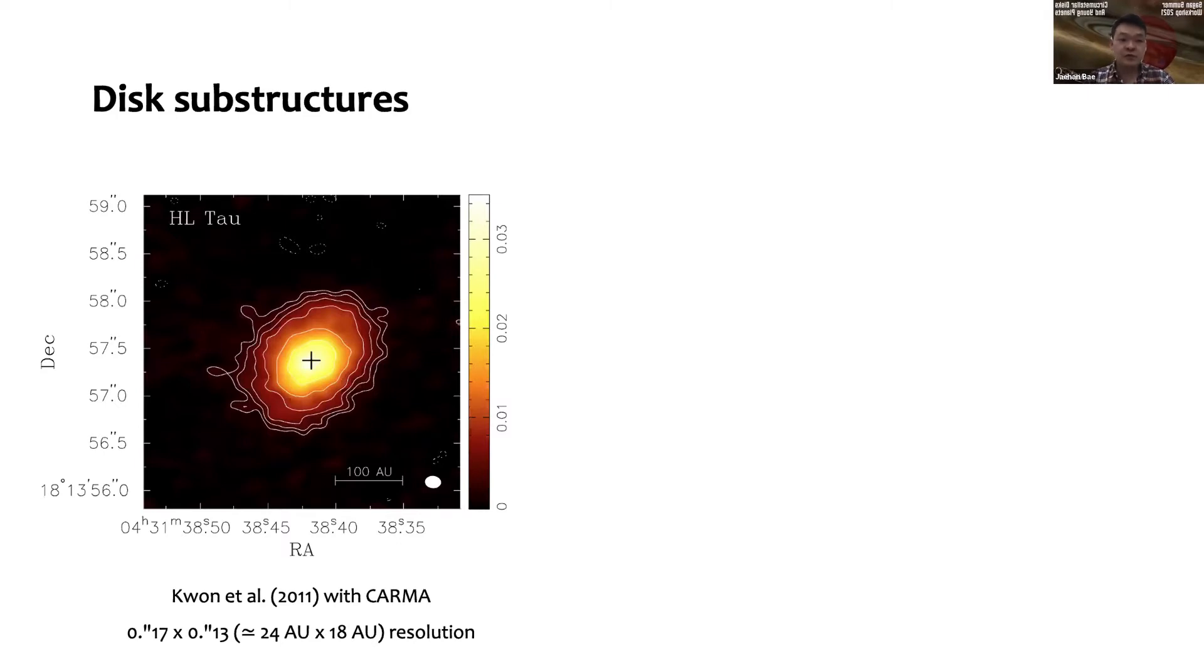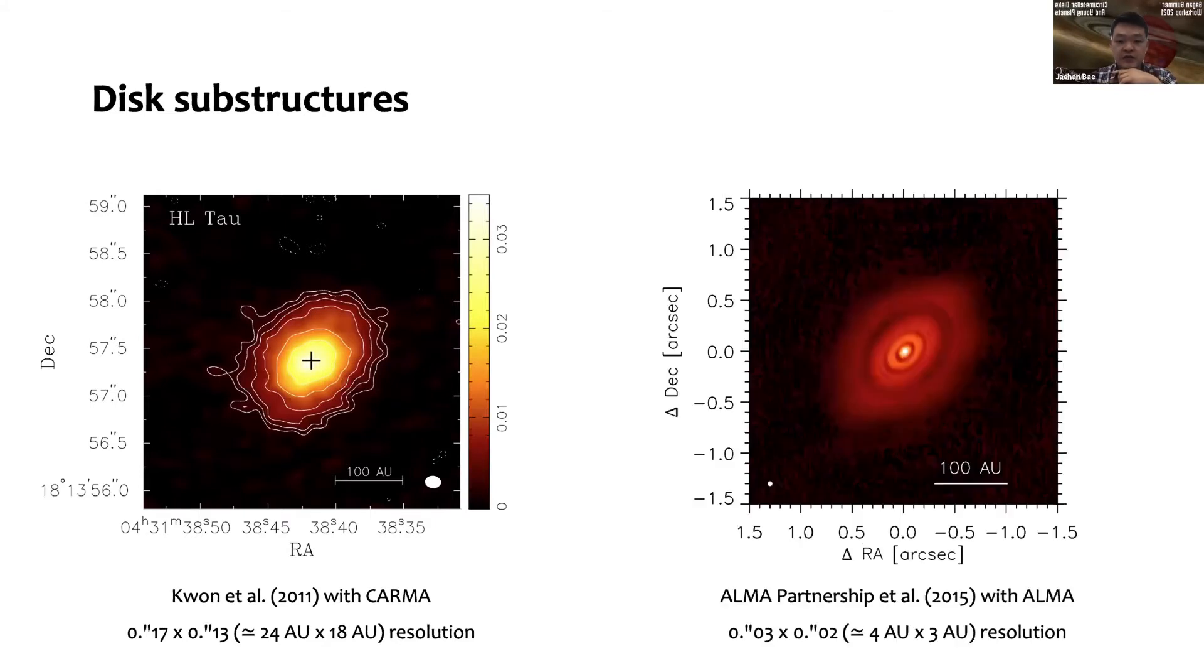We had pretty decent resolution of about 0.1 to 0.2 arc second, but at that moment there was no clear evidence of substructuring in this disk. As you might have seen, this is the image what ALMA has taken at about 0.03 arc second resolution, or 3 to 4 AU resolution.